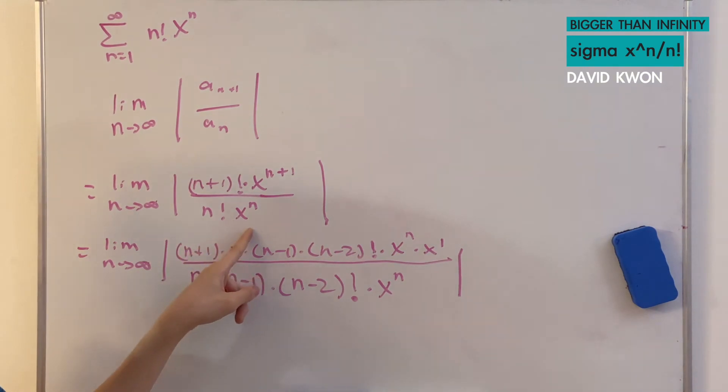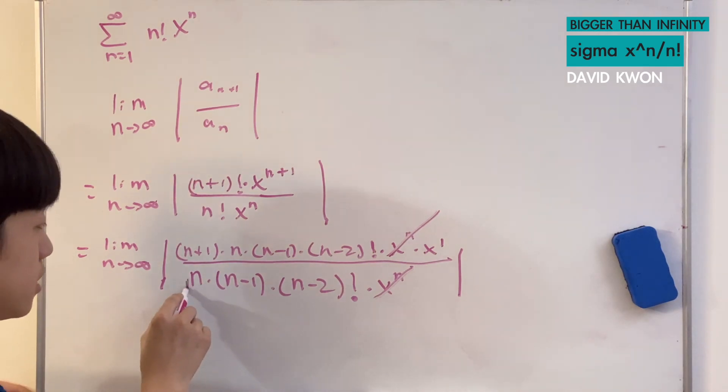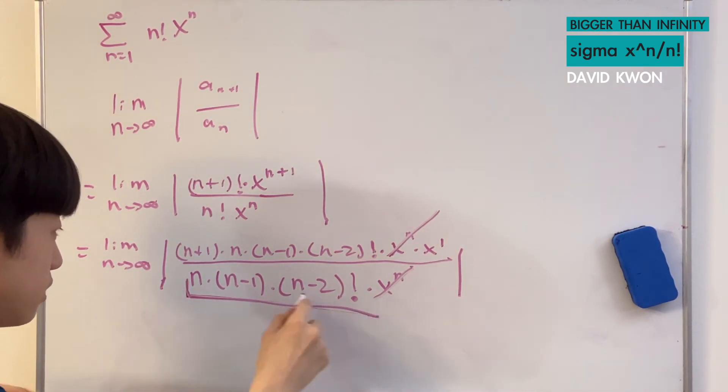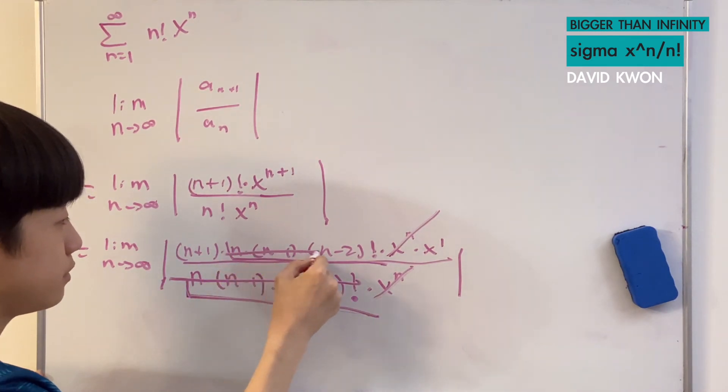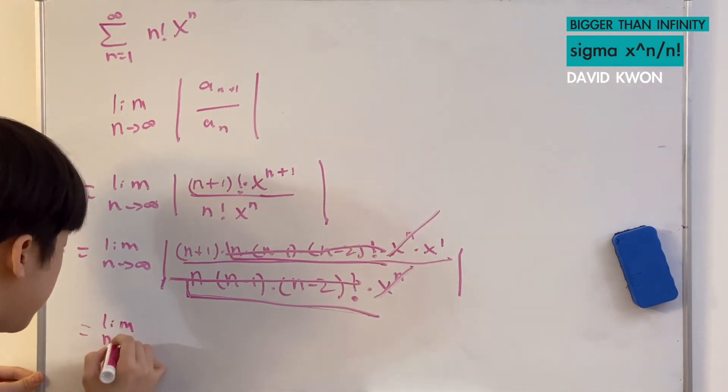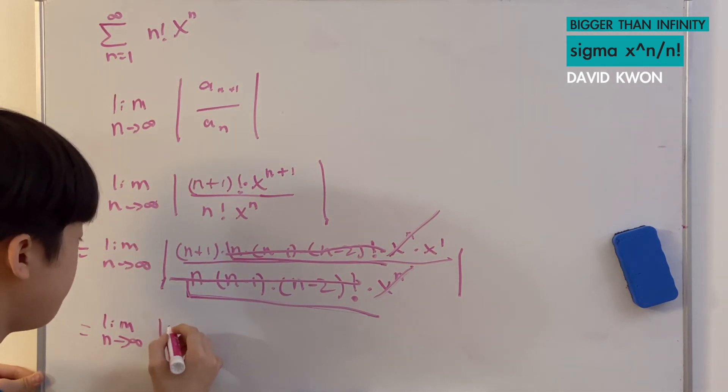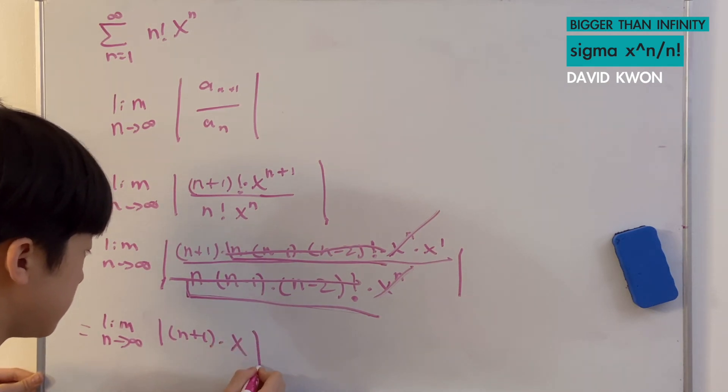We really can't make this more complicated. I can cancel out the x to the power of n from the numerator and from the denominator. That is equal to 1. And then from here are the same thing as this. That is both being on the numerator and the denominator. So it all cancels out to be equal to 1. So what are we left with? That is just limit as n approaches infinity of the absolute value of (n+1) times x.